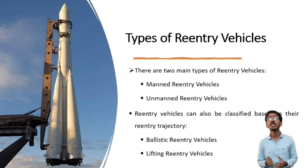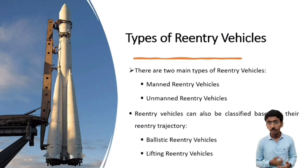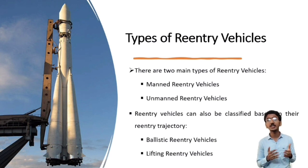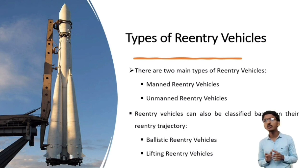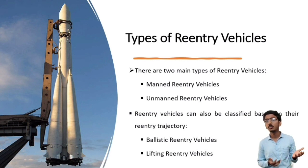Reentry vehicles can also be classified based on their reentry trajectory. First is the ballistic reentry vehicle, where a spacecraft enters the earth atmosphere with a steep angle of descent without attempting to generate lift or control its trajectory. During this reentry, the spacecraft follows a high-speed unpowered trajectory through the atmosphere, using the earth atmosphere as a braking medium to dissipate its kinetic energy and slow down. Next is lifting reentry vehicles, which use wings or other aerodynamic surfaces to generate lift and control their descent — examples include the space shuttle and the Russian Buran spacecraft.